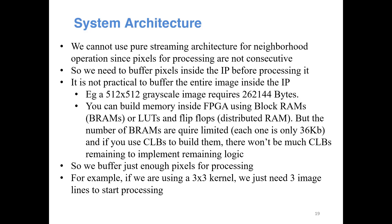It is not practical to buffer the entire image inside your IP. For example, a 512×512 grayscale image requires around 262 kilobytes. Inside an FPGA we have block RAMs — small memory blocks of around 36 kilobytes in certain series — as well as look-up tables and flip-flops. However, the number of BRAMs is quite limited, usually a few hundred. Using look-up tables and flip-flops to make distributed memory would consume too many CLBs, leaving little for the remaining logic.